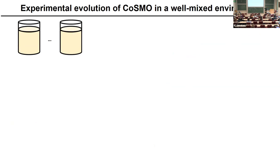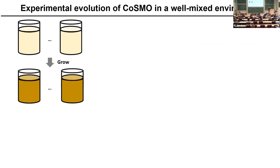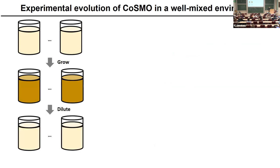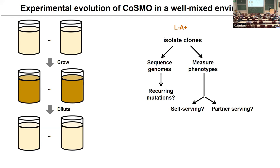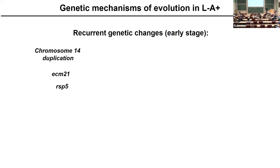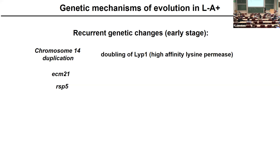We evolved COSMO in a well-mixed environment, starting with low densities in replicates. We let them grow to high density, dilute, and repeat the cycle. We focused on one population, L minus A plus, isolated clones, did whole-genome sequencing, and asked: do we see recurring mutations? Because if a mutation repeatedly occurs, it's likely adaptive. We then measured phenotypes — whether it's self-serving and/or partner-serving. At the early stage we see recurrent genetic changes in one of three loci: chromosome 14 duplication, ECM21, and RSP5. Because yeast is a well-studied organism we could quickly figure out what's going on. Chromosome 14 harbors the LIP1 gene, encoding the high-affinity lysine permease, so the duplication means doubling of LIP1 protein. ECM21 and RSP5 mutations would stabilize the LIP1 protein — all these mutations serve to increase high-affinity lysine permease abundance in the cell.